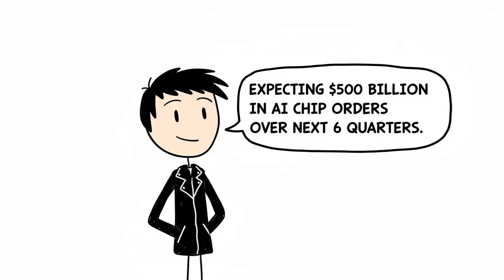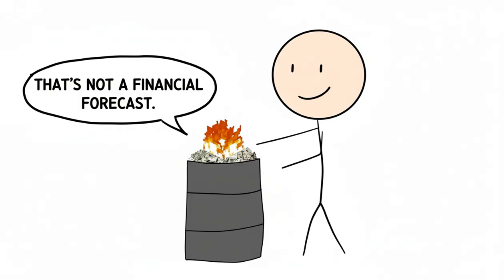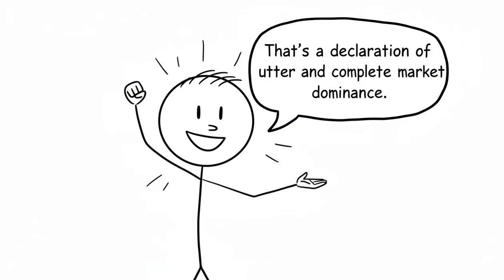Then, Jensen Huang, in his signature leather jacket, casually mentions they're expecting $500 billion in AI chip orders over the next six quarters. That's not a financial forecast, that's a declaration of utter and complete market dominance.